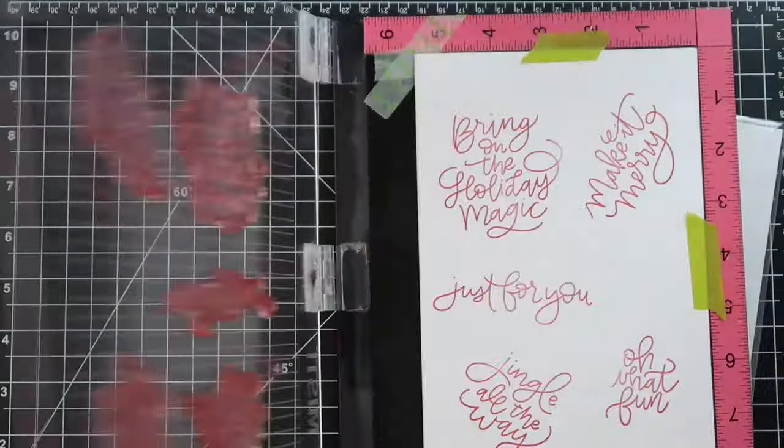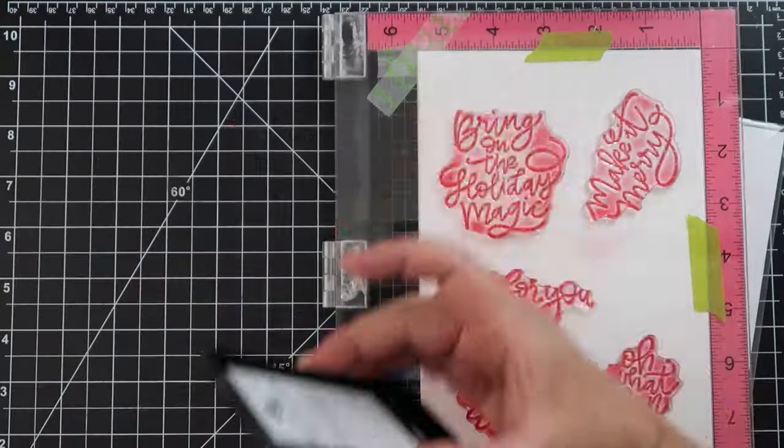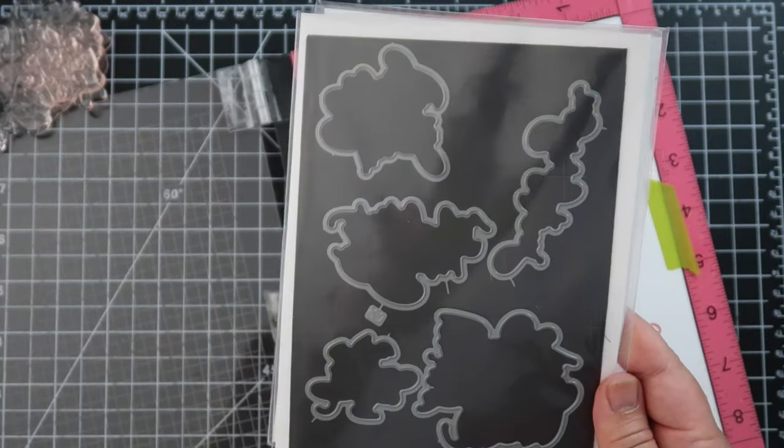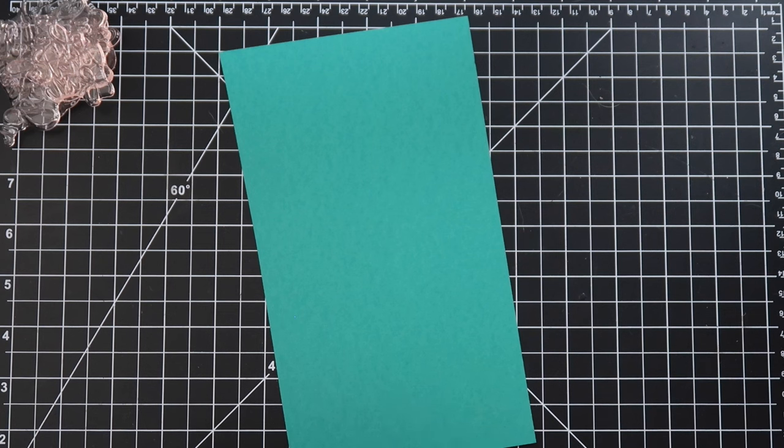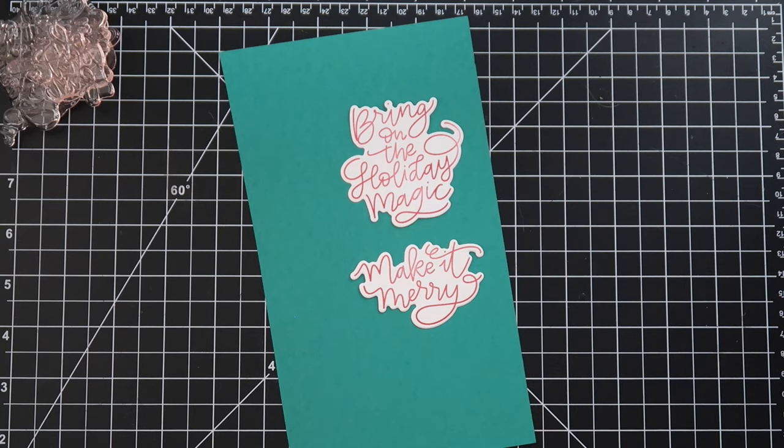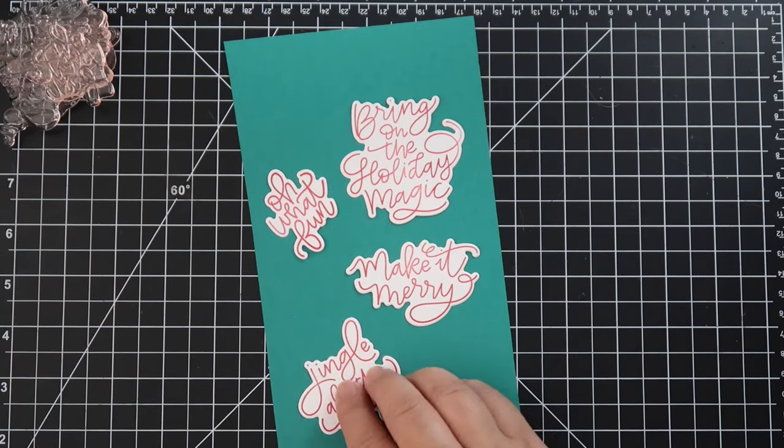This stamp set also comes with coordinating dies and it looks incredible. These are what the dies look like and this is what it looks like cut out and I just adore the look. I love it against a colored background. It looks really really nice.